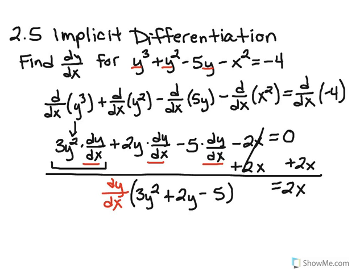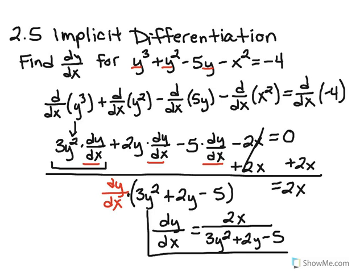Now, there's only one last thing for me to do to solve for dy dx. dy dx is being multiplied by this entire expression. So in order to solve for dy dx, all I have to do is divide both sides by this expression. So that's going to look pretty ugly. It's going to be 2x divided by this whole thing, so 3y squared plus 2y minus 5. And as ugly as that may seem, this is my final answer. This is how implicit differentiation works. And that concludes this tutorial.